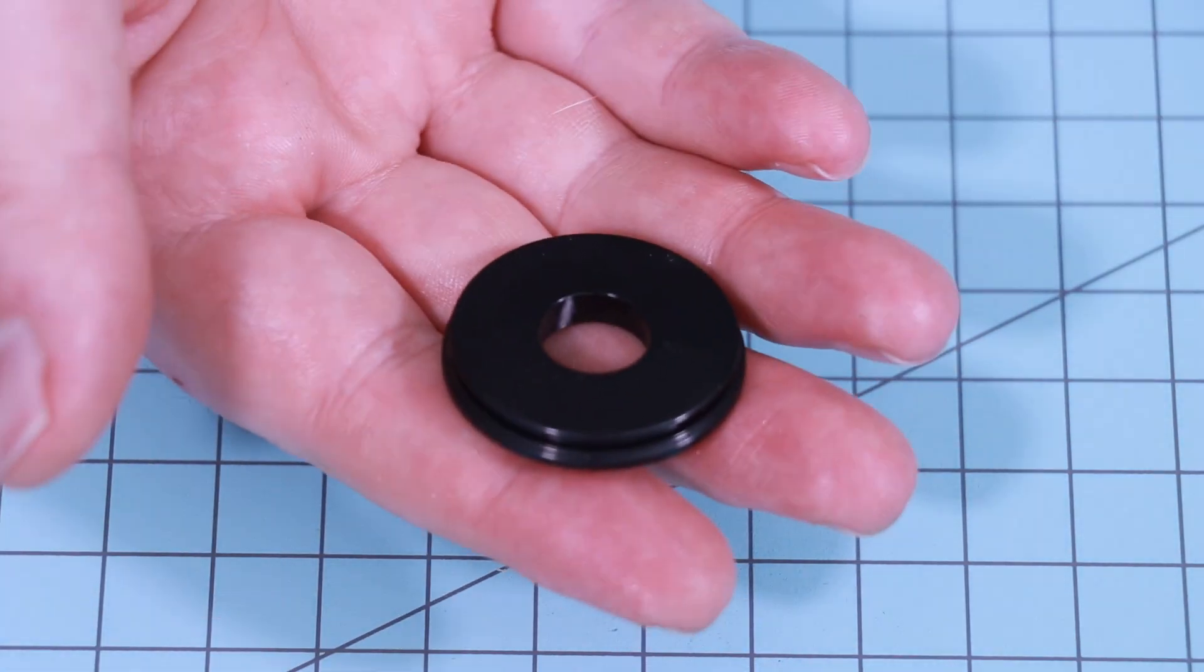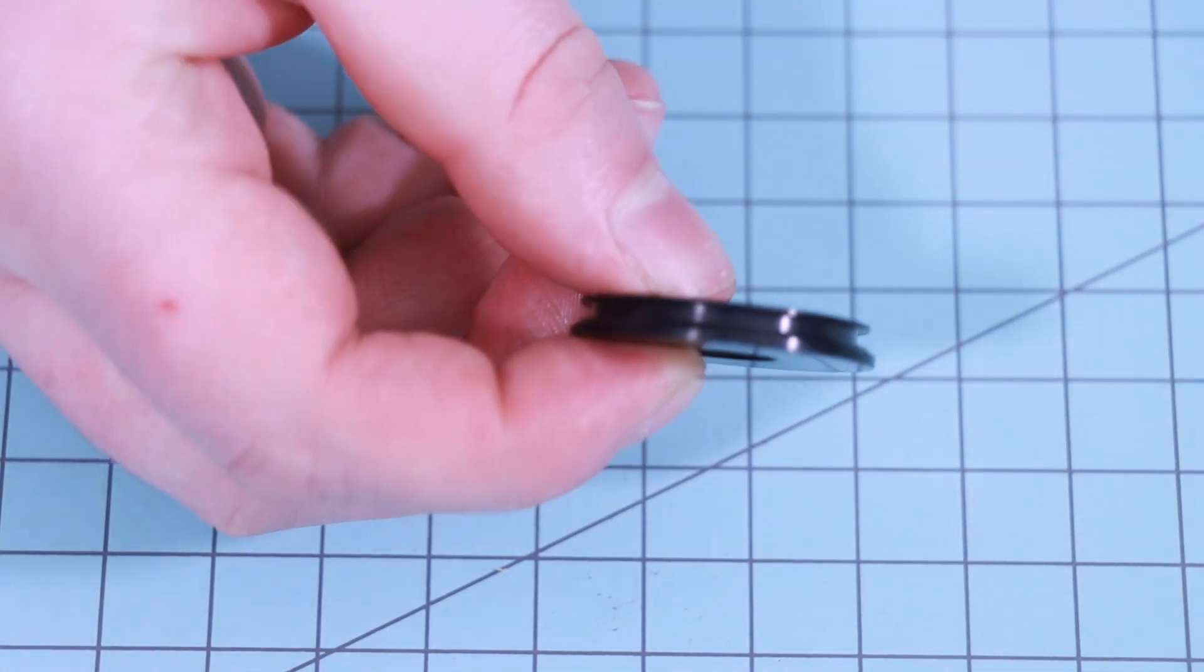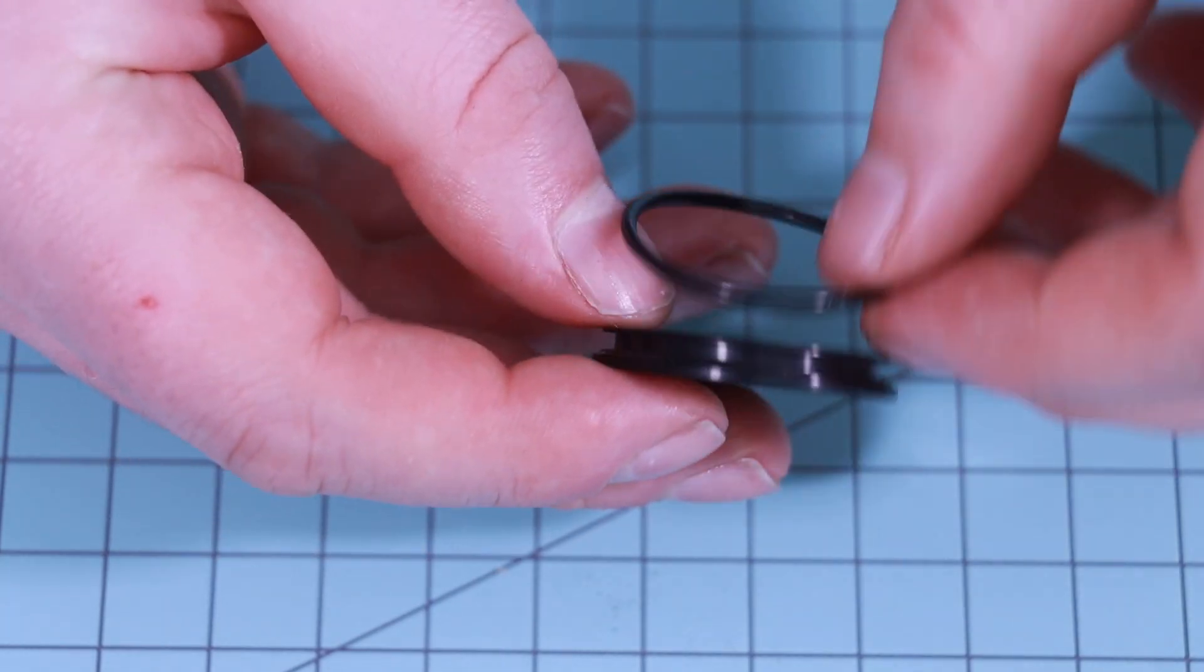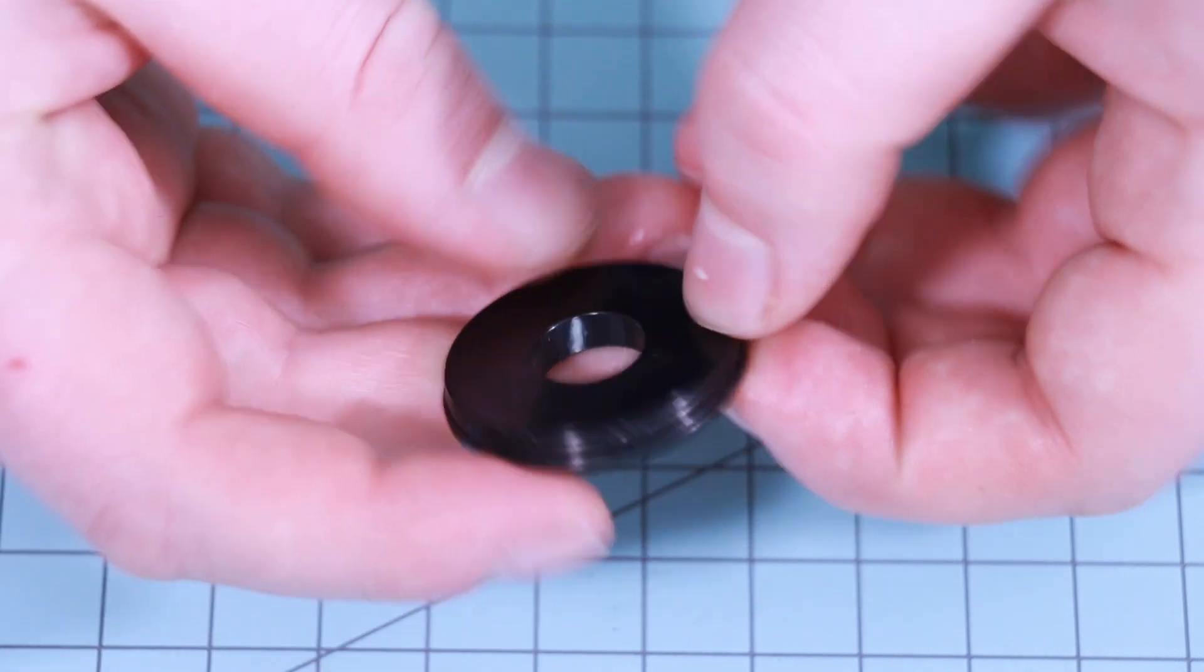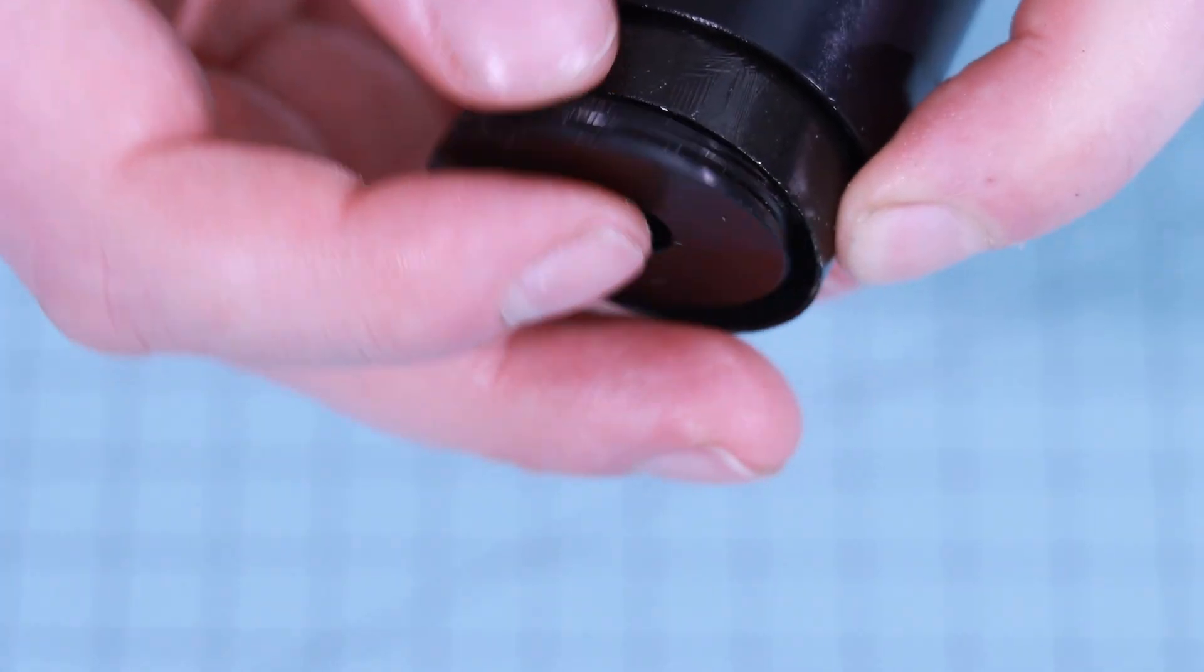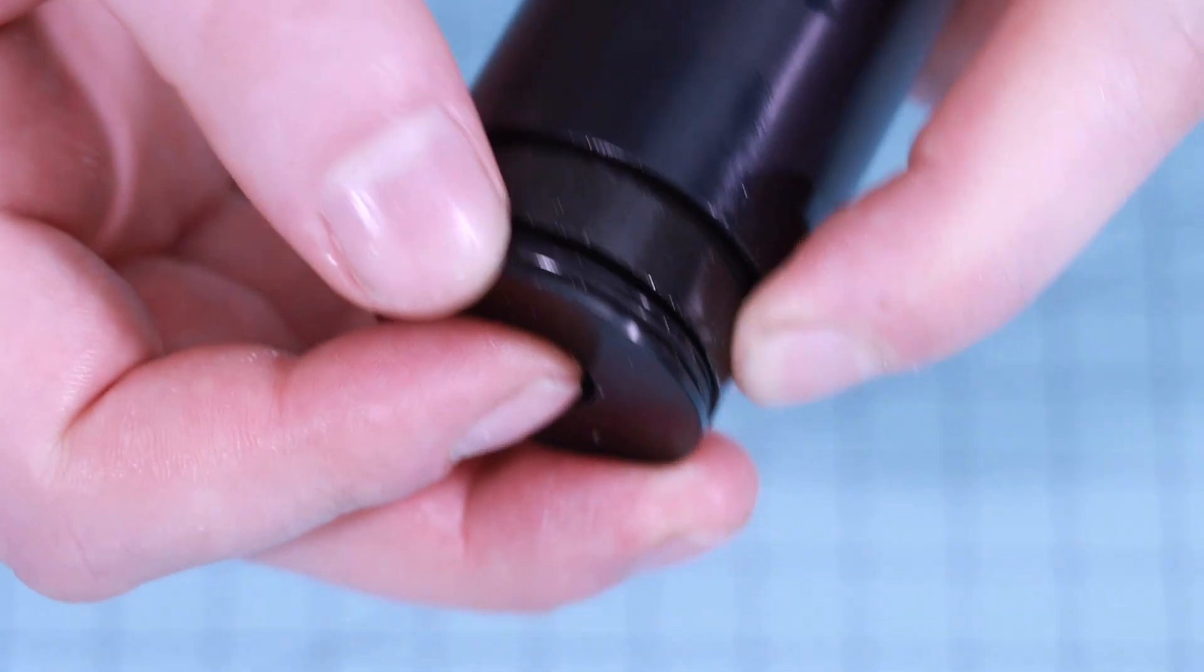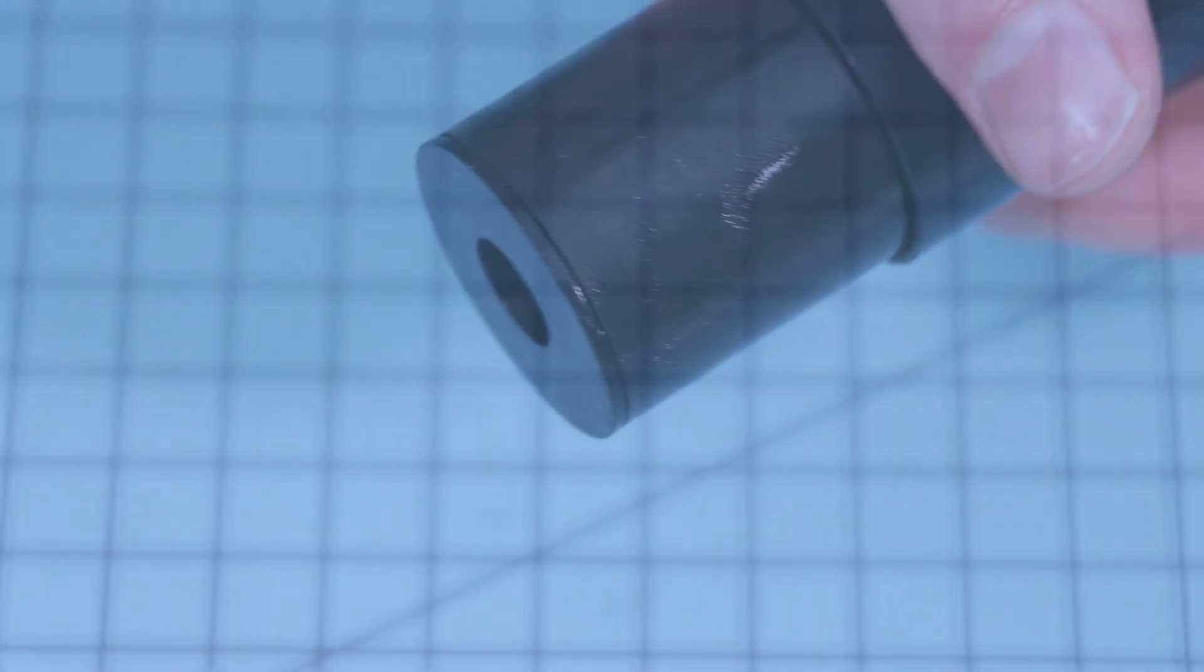Now let's take the forward seal disc and apply the forward seal disc o-ring. And now let's just snap the forward seal disc into the motor liner at the forward end of the motor. Make sure the seal disc is fully seated.